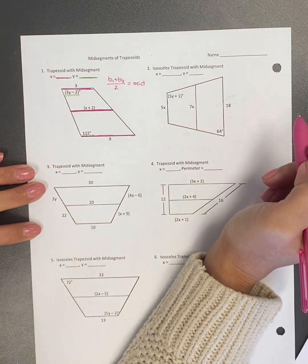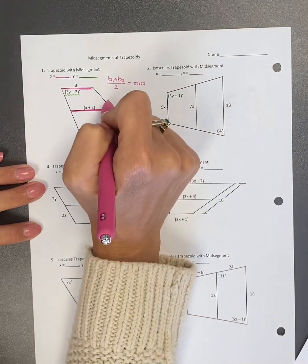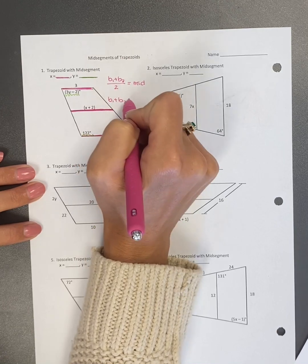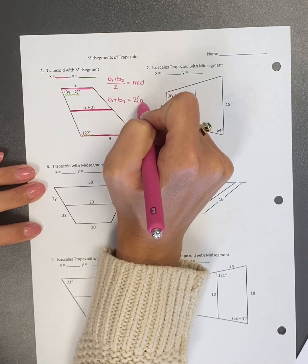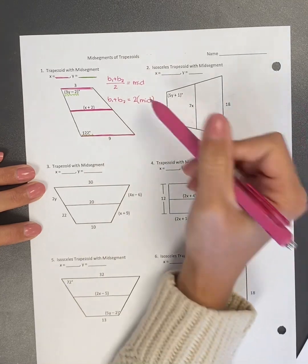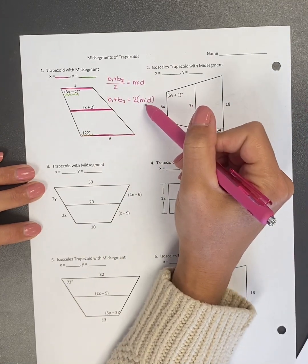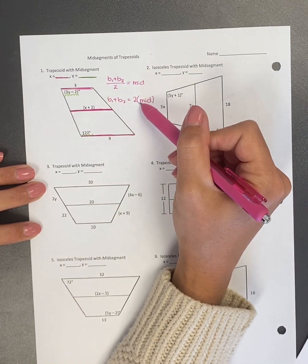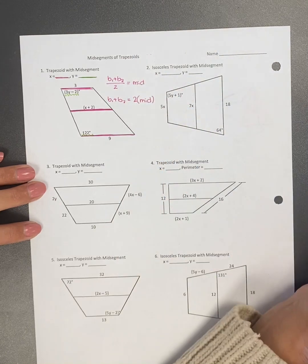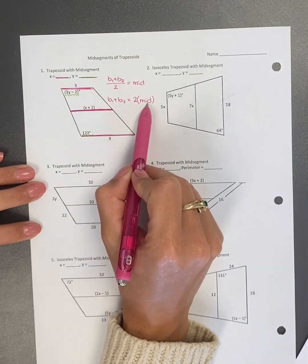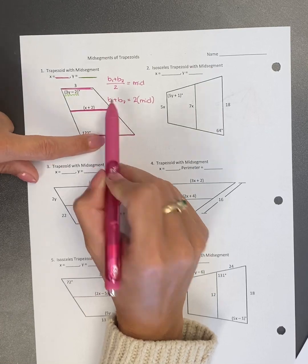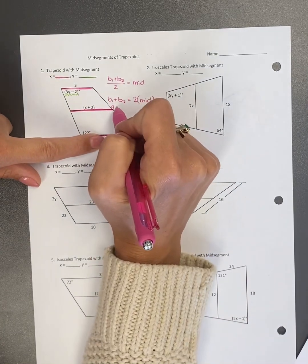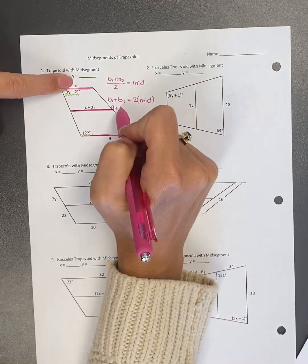What this formula is, is the bases added together divided by two equals to the midsegment. You can also rearrange this to where the bases added together equals two times the midsegment. So both of these formulas work. A lot of people prefer to do the multiplication versus the division, which is totally fine. So I'm going to use this formula because I've written it second. So for base one, I'm going to use nine. For base two, I'm going to use the top, which is three.